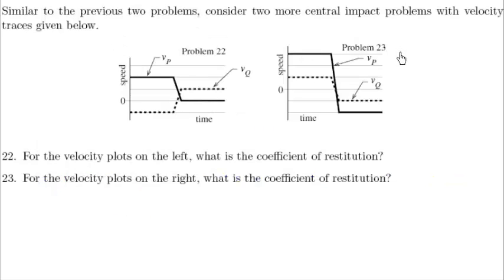Before we end this video, I want to talk about one more problem. And it's this one right here. So it's the same setup we had last time, where we had particles p and q that are constrained to be on a line. And this time I have different velocity traces. And it asks me for the velocity plot on the right, what's the coefficient of restitution? So here we go. Here's my velocity trace. Let's find that coefficient of restitution.